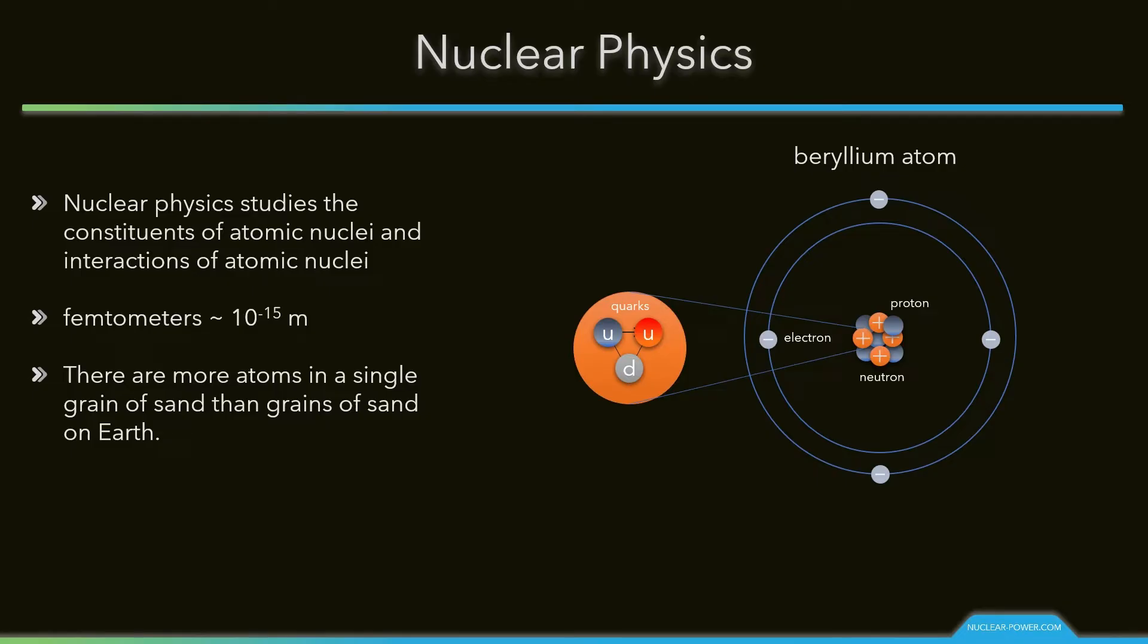This image shows a beryllium atom. Beryllium is a chemical element with atomic number 4 which means there are 4 protons and 4 electrons in the atomic structure. Its nucleus contains 5 neutrons.